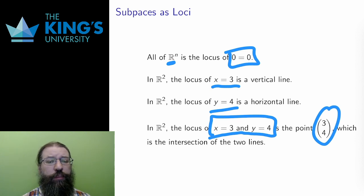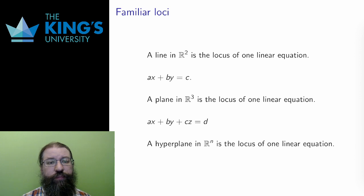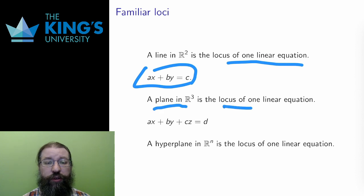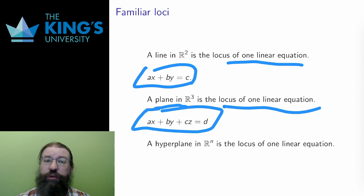Let me be a bit more general now. A line in R2 is the locus of any one linear equation. These are pretty familiar to you from calculus, though I won't often use the slope-intercept form that you may be most accustomed to. A plane in R3 is also the locus of any one linear equation. With one equation in R3, I don't get a line anymore. I get a whole plane.